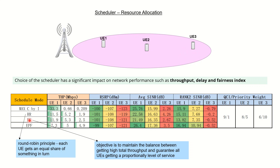After that, there is Proportional Fair, a better version of Round Robin. Resources are allocated depending on how it can guarantee throughput across all users — it accounts for delay and fairness index as well. In this case, more resources are allocated to UE 2 and UE 3 compared to UE 1, and they are able to achieve better throughput.